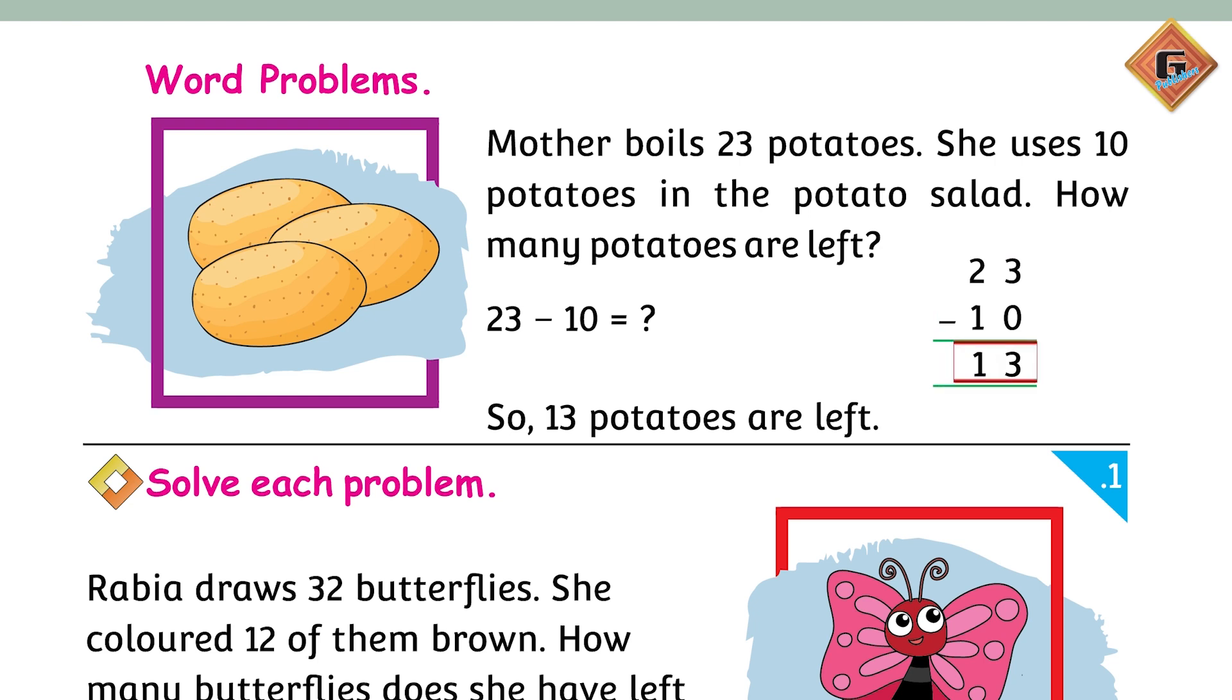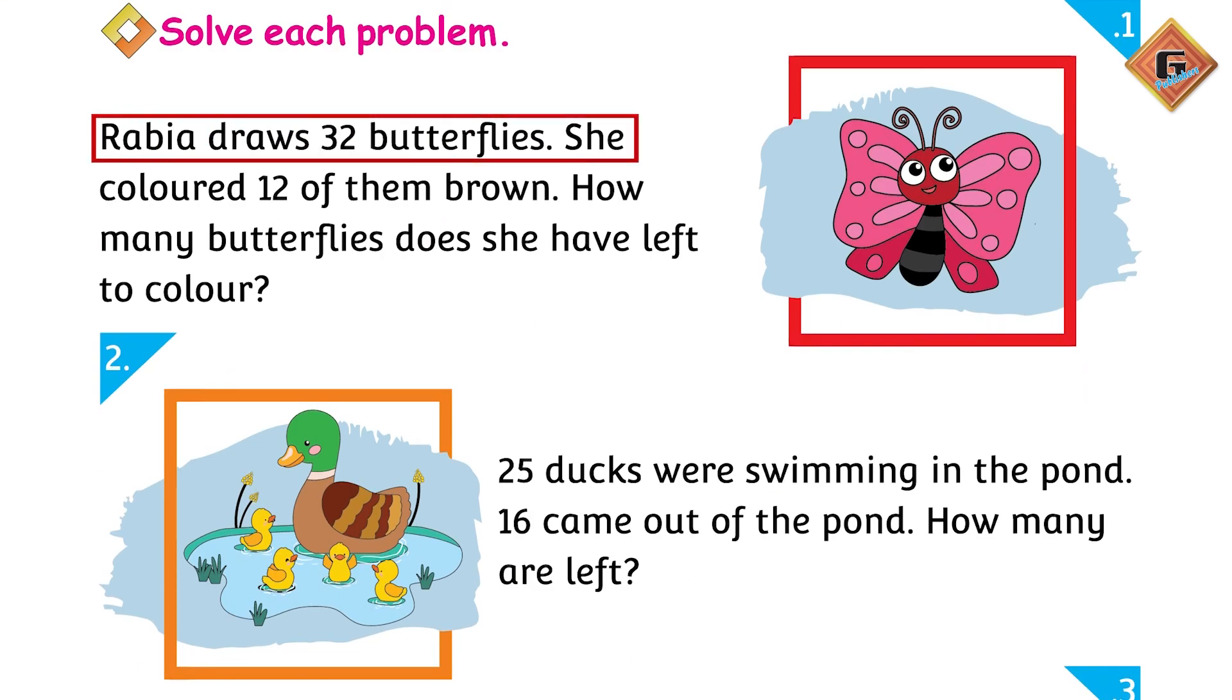12 of them brown. How many butterflies does she have left to color? Rabia ne 32 butterflies draw ki, 12 ko brown color kiya. Just consider 32 and 12 in column form. Ab pehle hum units mein se ones mein se